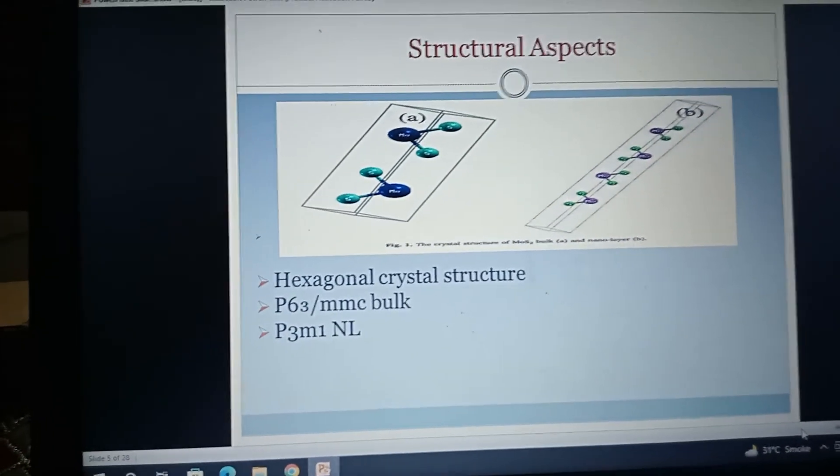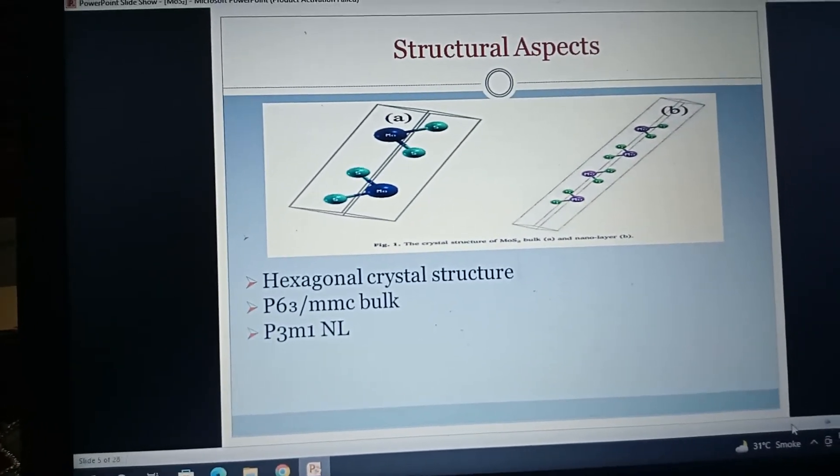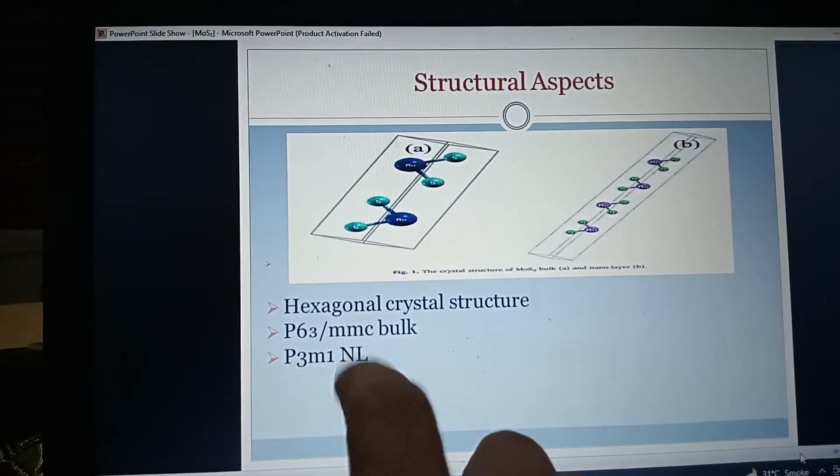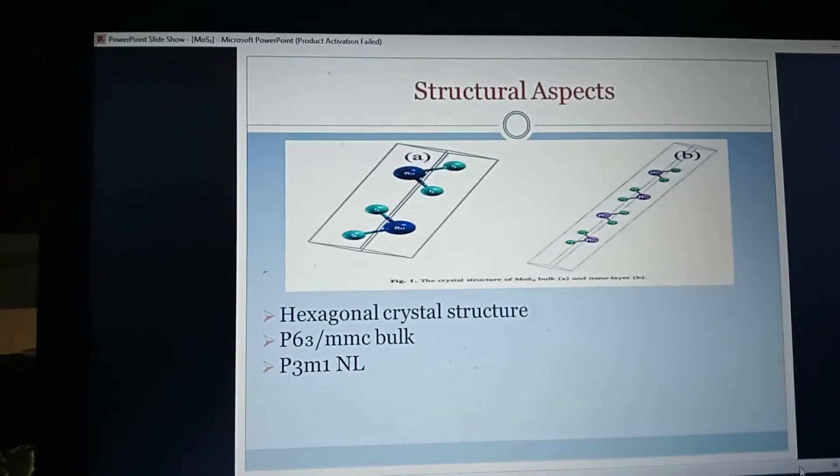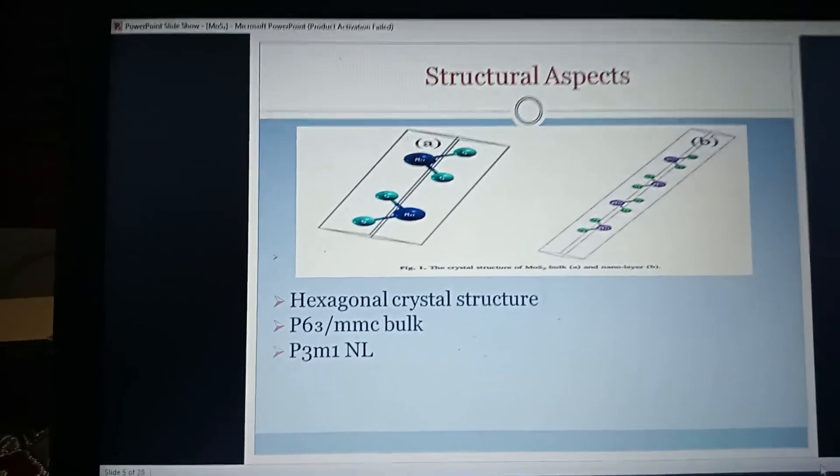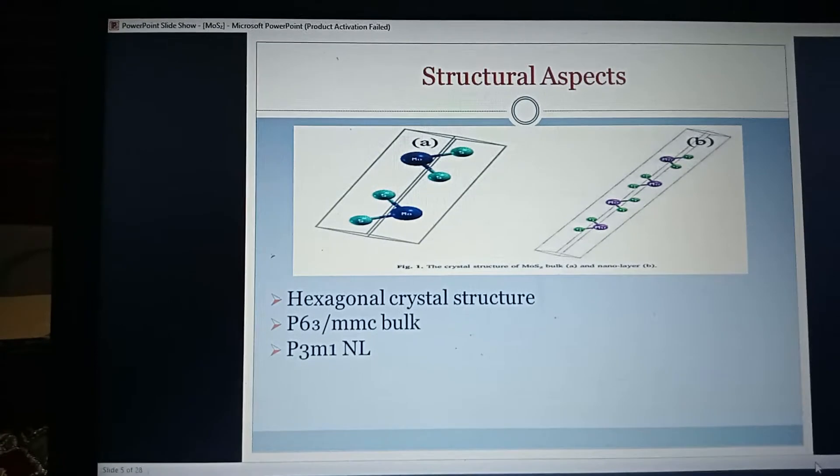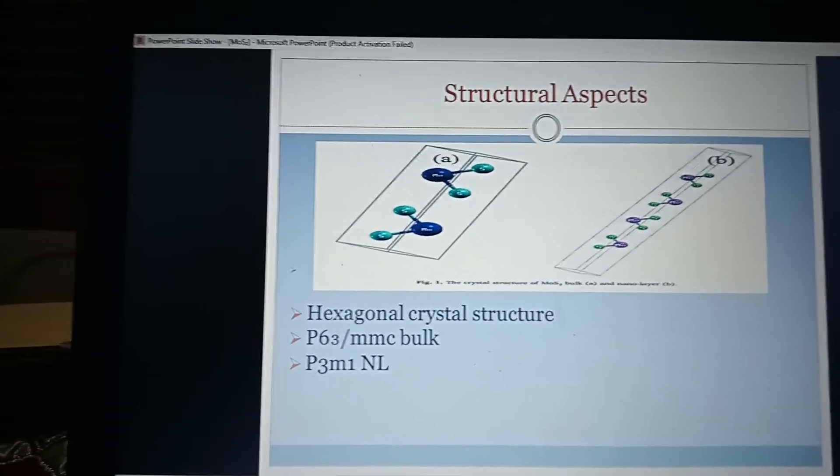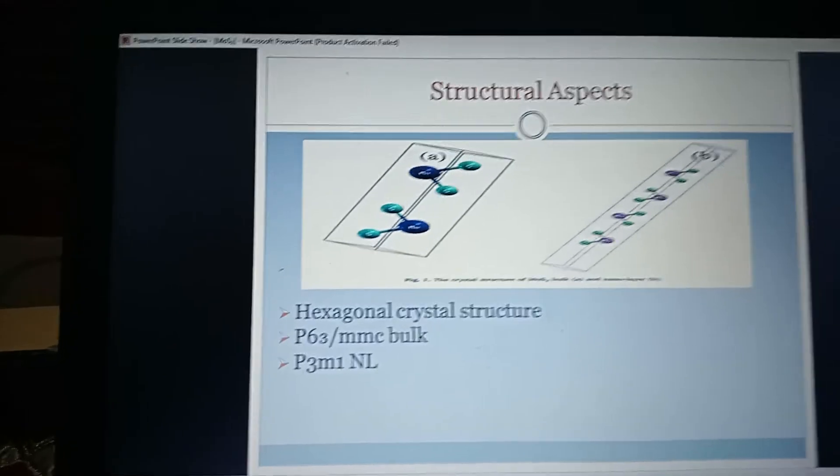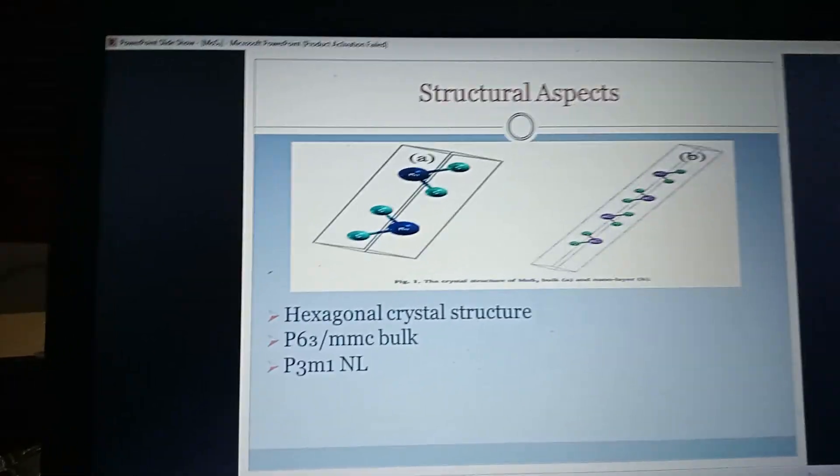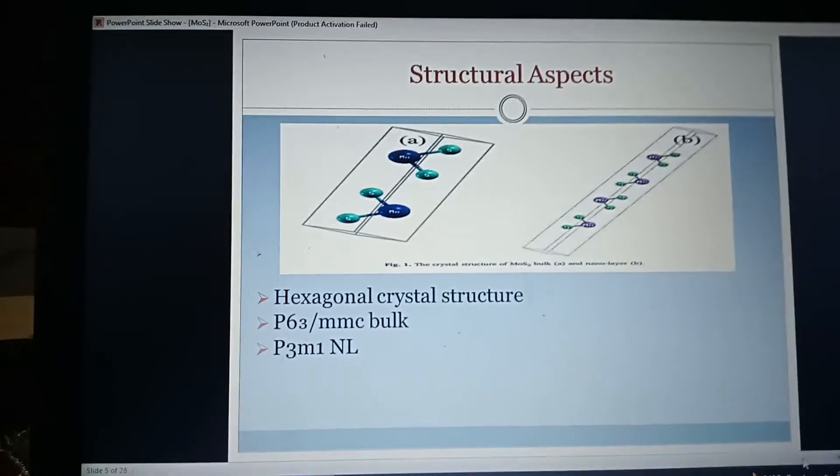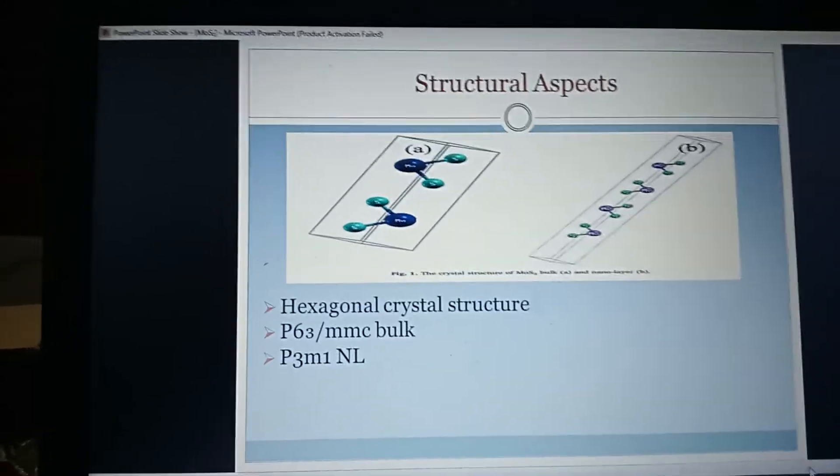Structural aspect: hexagonal crystal structure, and its space group is P63/mmc for bulk. You should know what space group is when you run it. The bulk layer space group is P63, and the nano layer is P3M1. This depends on your work.